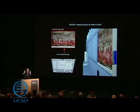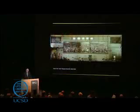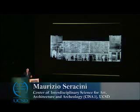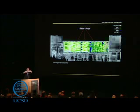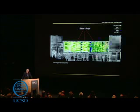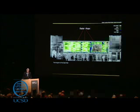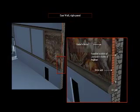Putting all the pieces together: the thermal images showing the structural layout, and the radar maps collecting signals just behind the brick wall — as if we had stripped the brick wall down to see what signals are generated behind it. There is a very strong signal concentration on the right panel of the east wall. This is where we think the Leonardo da Vinci mural should be. There is the brick wall, the air gap, and possibly Leonardo's mural.